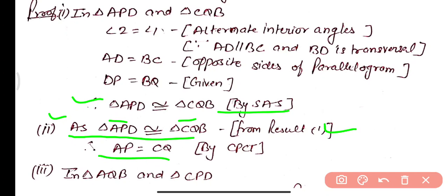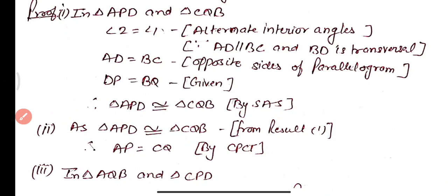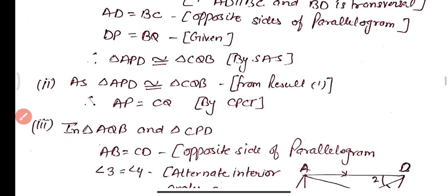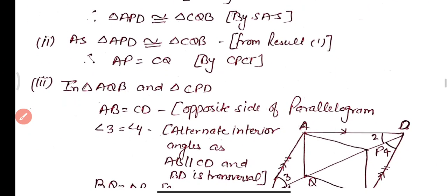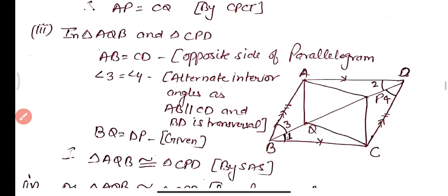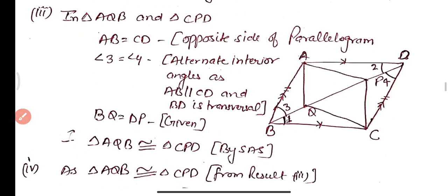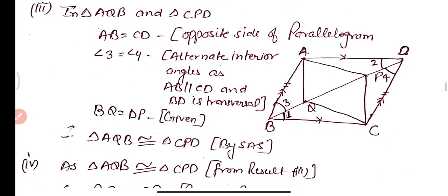Part 2: From part 1, since triangle APD is congruent to triangle CQB, by CPCT we can say AP equals CQ.